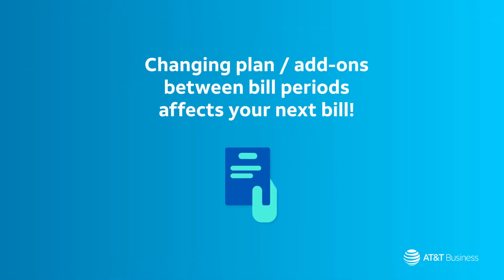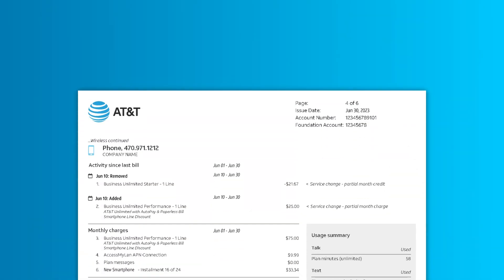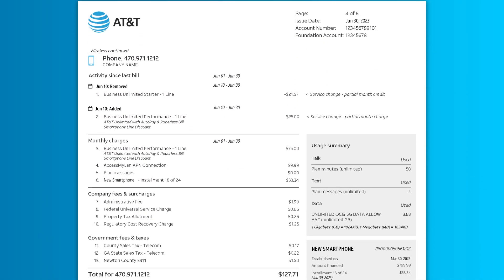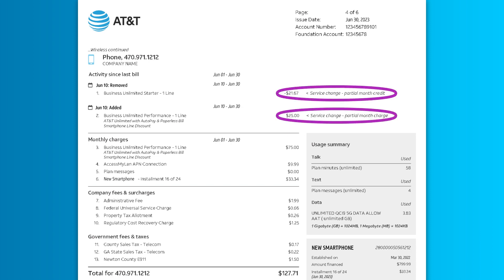Changing your plan or add-ons between bill periods affects your next bill. This video will explain how. If you update your plan or add-ons in the middle of a bill period, you'll see partial month charges or credits on your next bill.